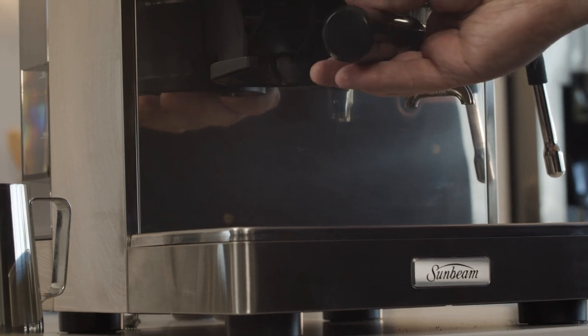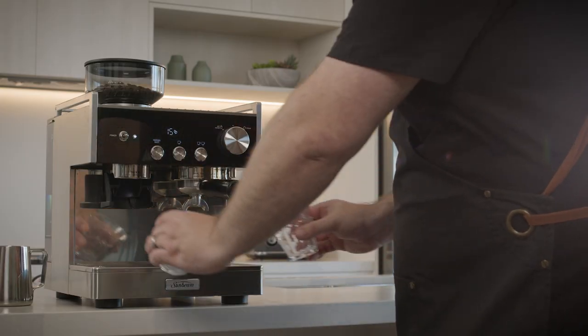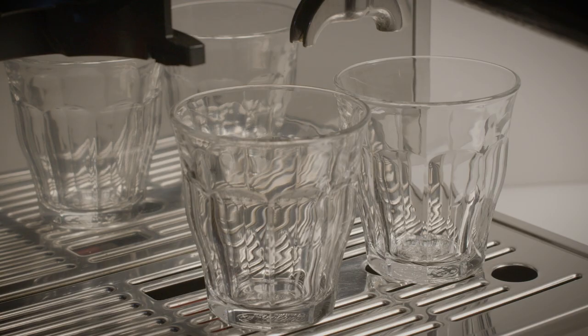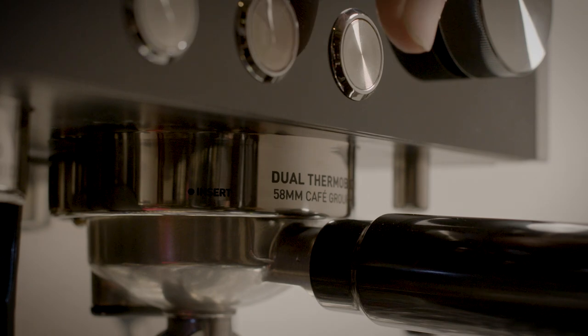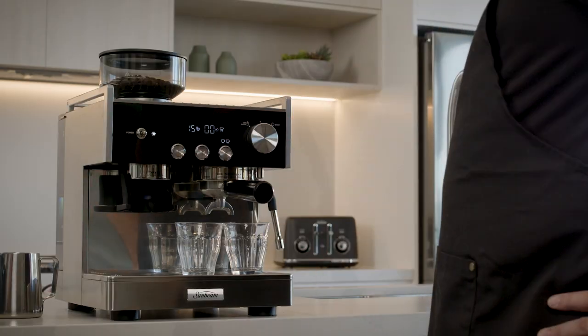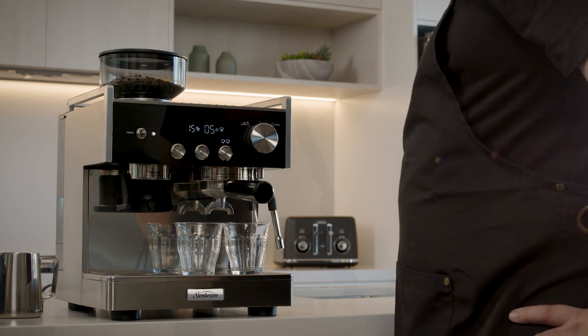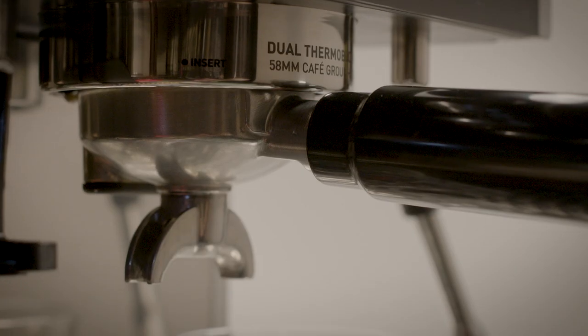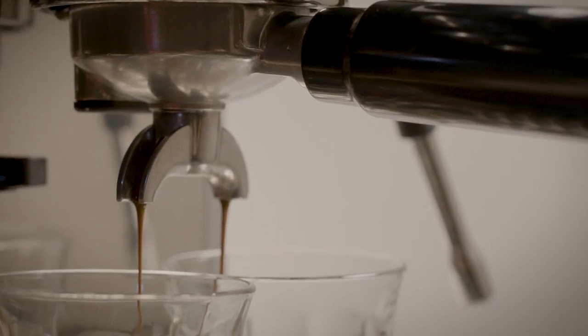Now that you've successfully dosed and tamped, insert the group handle into the group head, turning it to the center position. Now you're ready to place the cup under the group handle. Press the one cup or two cup button. I selected the two cup filter basket earlier so I'm going to press the two cup button. The shot volume has been automatically programmed to dispense the right amount of water. It will also automatically stop when the right amount of coffee has been poured.